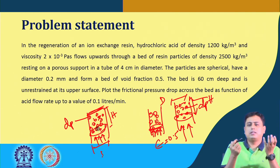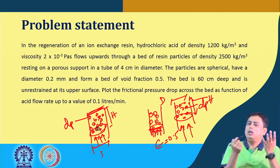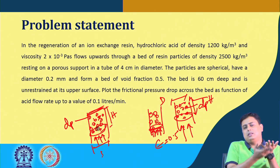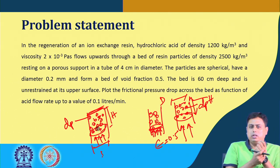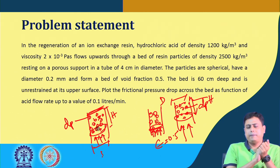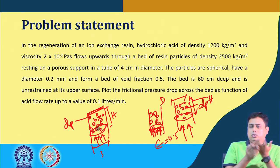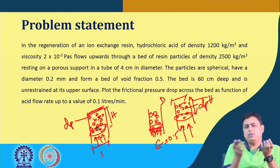You remember the scenario of particle separation when we talked about terminal velocity and upflow velocity. Although in this problem there is a porous support at the bottom so particles cannot go down, if the velocity is sufficiently high, the particles can go away with the flow — they can be carried away from this tube by the liquid media. So the question is whether such a flow rate — 0.1 liters per minute — can be withstood by the particles so they don't move out of the tube.